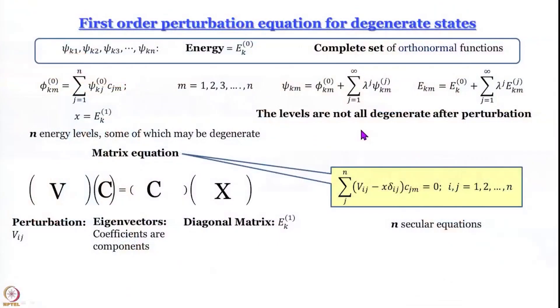In this module we are going to learn about two applications of perturbation theory of degenerate states in atomic and molecular systems. But before that, let us remember where we had stopped in the last module. We developed first-order perturbation theory for degenerate states. For degenerate states where you have n number of wave functions associated with the same unperturbed energy, you cannot write the perturbed wave functions as psi zeroth plus something.